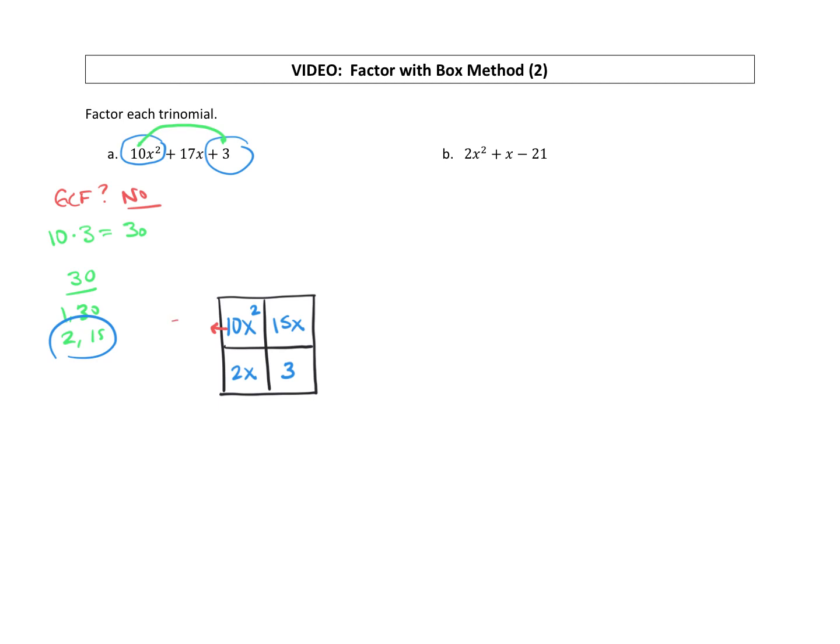And that would be a 5. Then look at the x's. We have x squared and x. The most number of x's they have in common is an x to the first power.